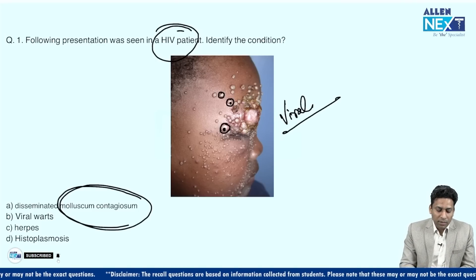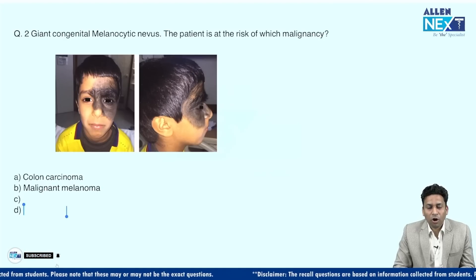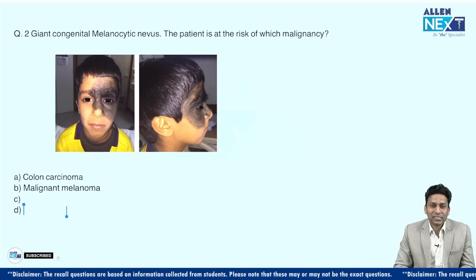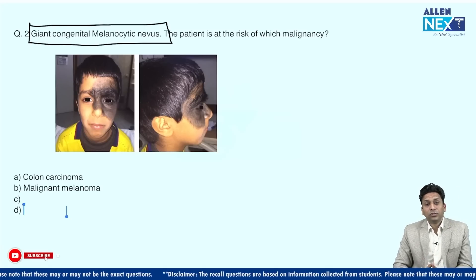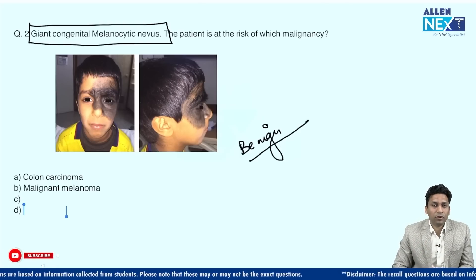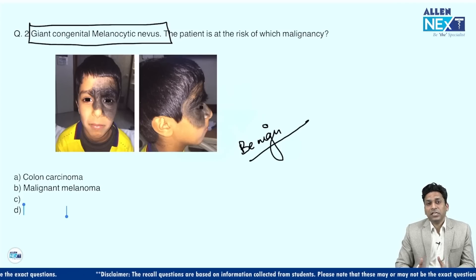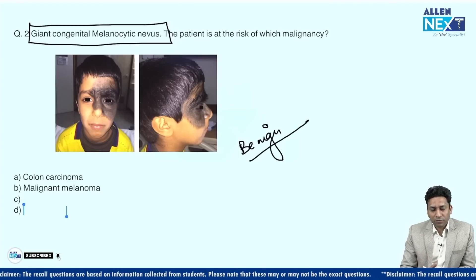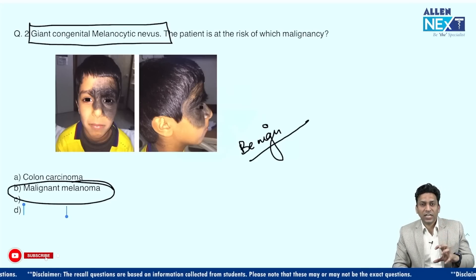This is a case of molluscum contagiosum where multiple lesions are present and larger in size in immunocompromised patients. Moving on, they showed an image of a child having a very large dark lesion over the face with hypertrichosis — excessive hair growth. This image shows a giant congenital melanocytic nevus, which is a benign condition and may persist throughout life. However, in very rare cases — about 5% — malignant melanoma can develop from this benign lesion.